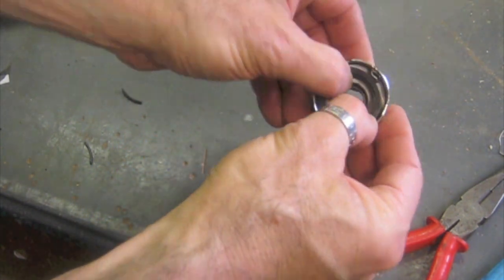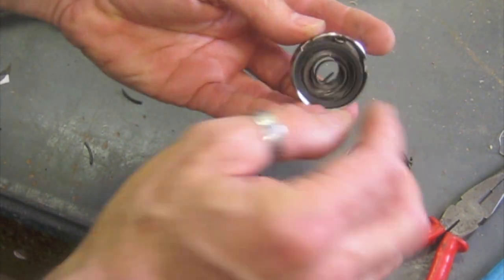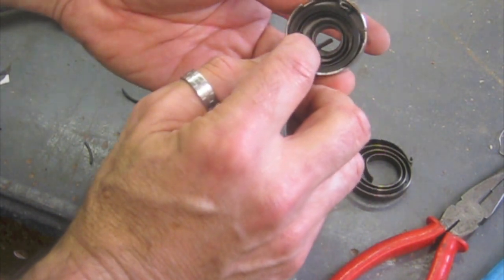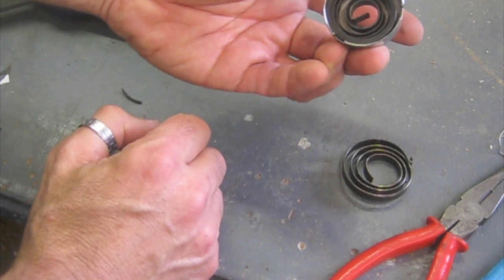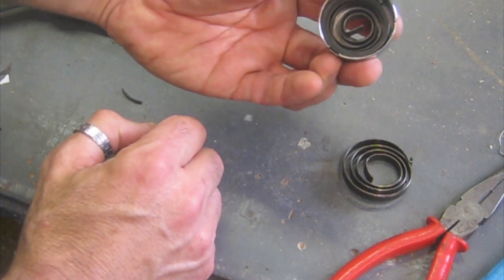So that new spring there is now sitting inside that cover. And again, as you can see, it's got that tab there and that's just going to slide straight over the spindle into the slot of the spindle and then we can generate some tension.